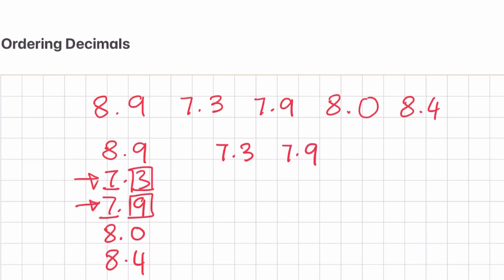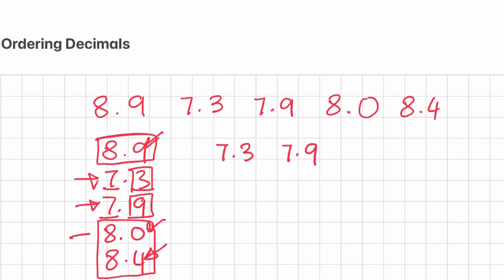Now let's compare the other three numbers: 8.9, 8.0, and 8.4. The units digits are all the same, so we are going to compare them using the tenths digit — we have 9, 0, and 4. Out of these three digits, 0 is the smallest, so 8.0 will be the smallest of these three numbers.